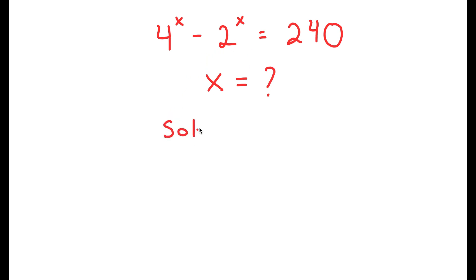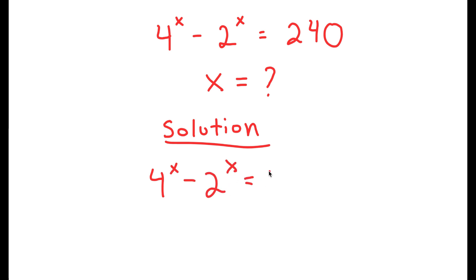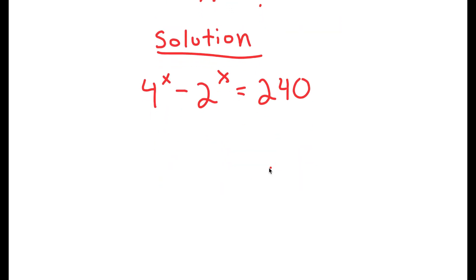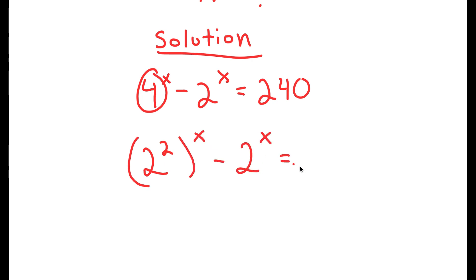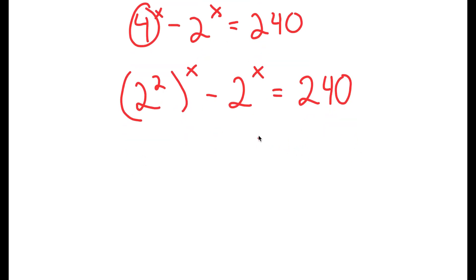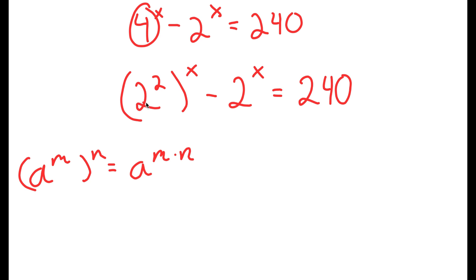And now for my solution. I'm going to start with the equation 4 to the power of x minus 2 to the power of x is equal to 240. I'm going to rewrite 4 as 2 squared, so I get 2 squared to the power of x minus 2 to the power of x is equal to 240. Using the property a to the power of m to the power of n equals a to the power of m times n, I get 2 to the power of 2x.